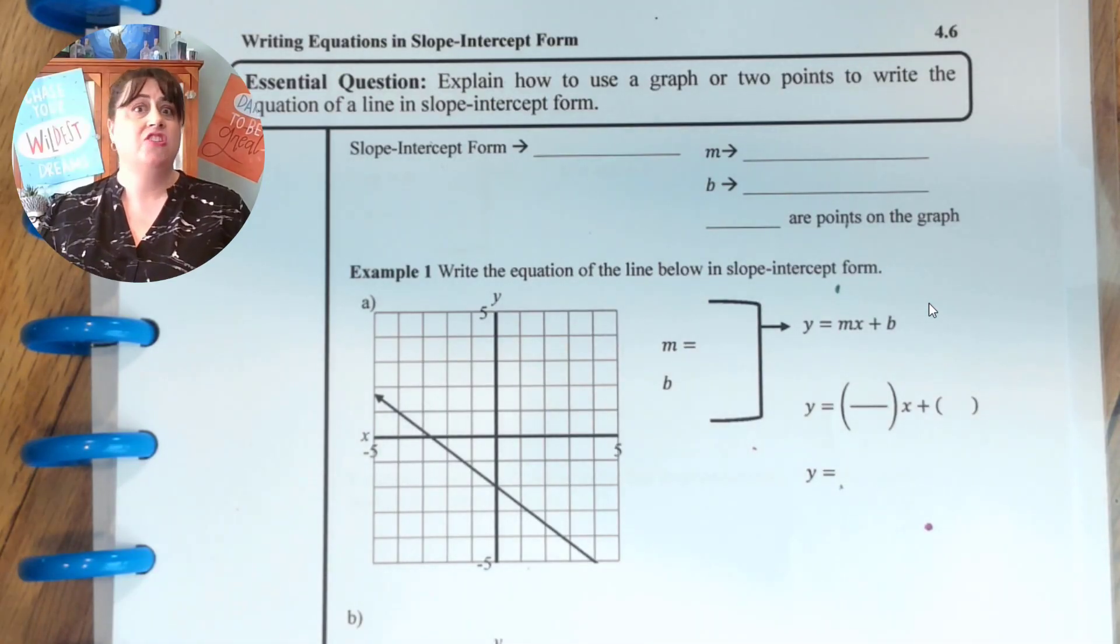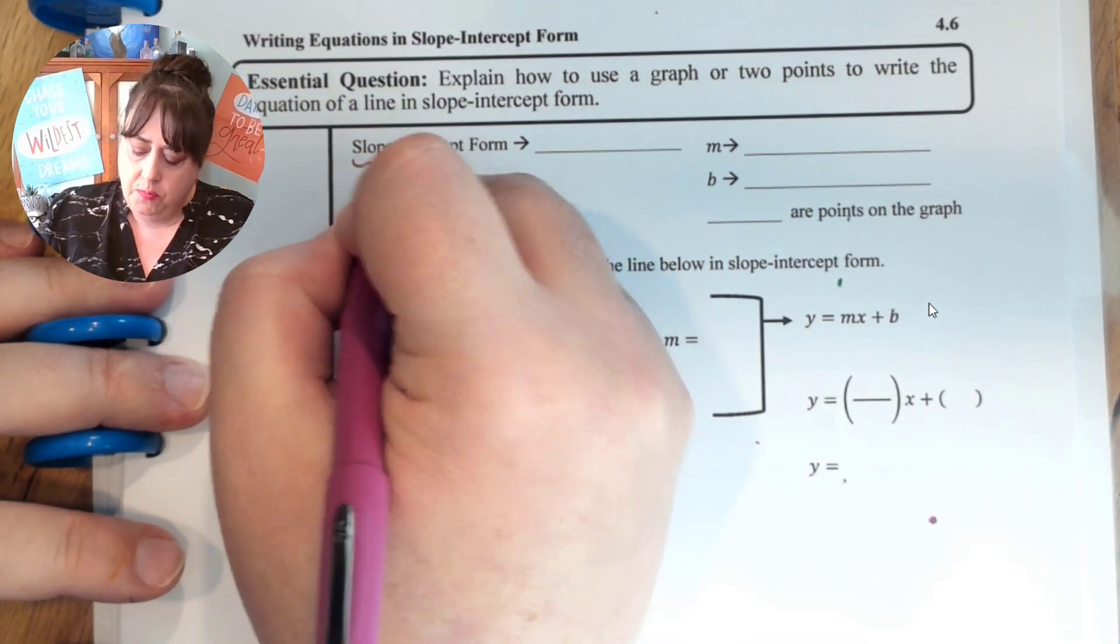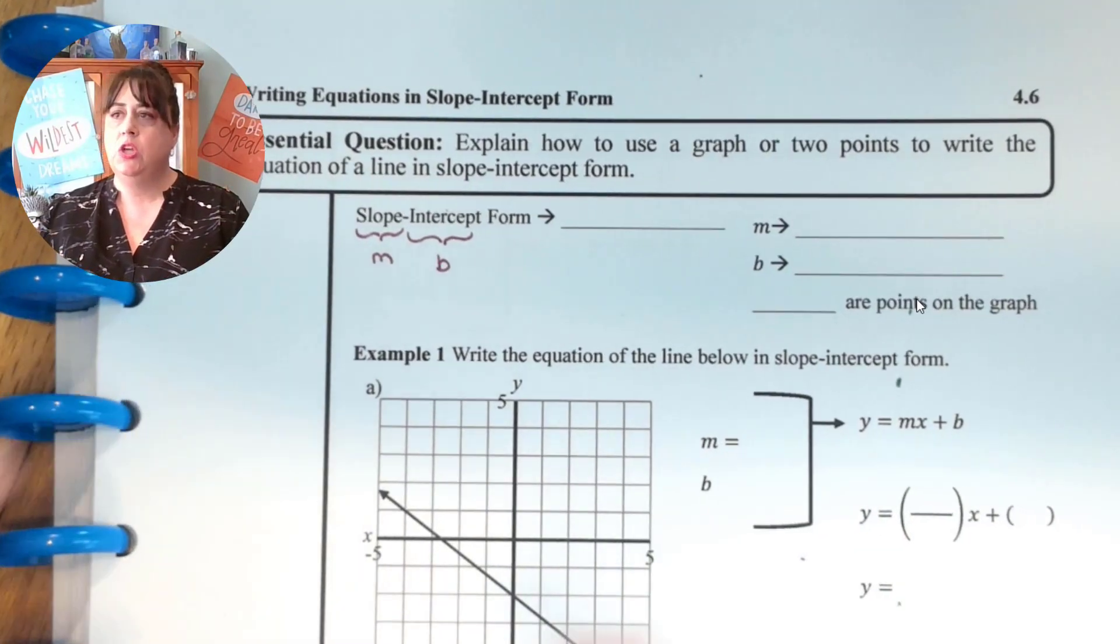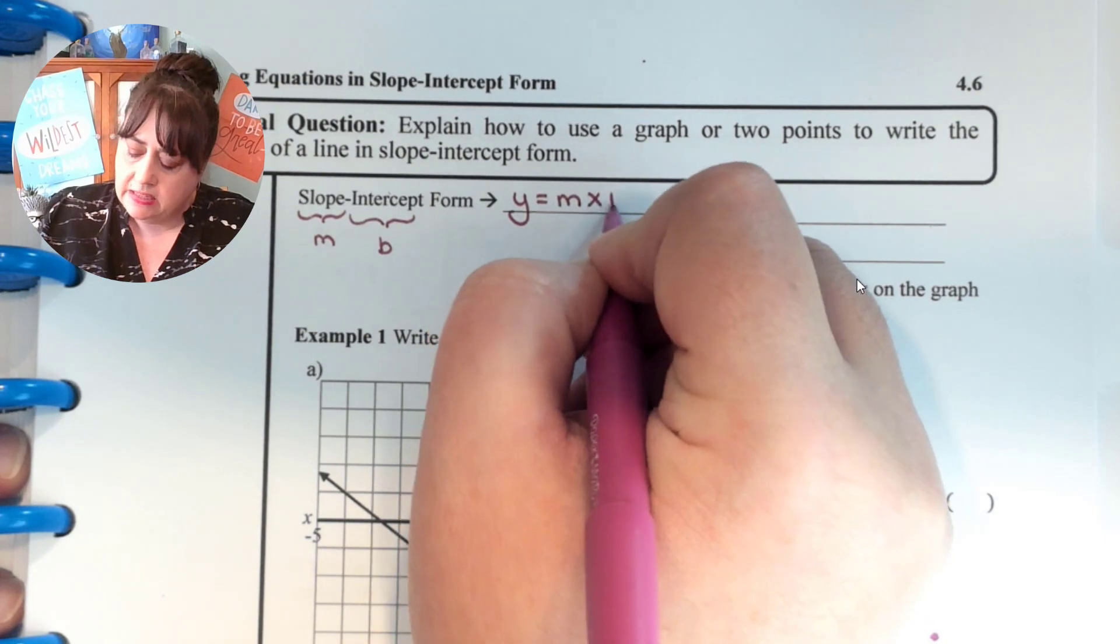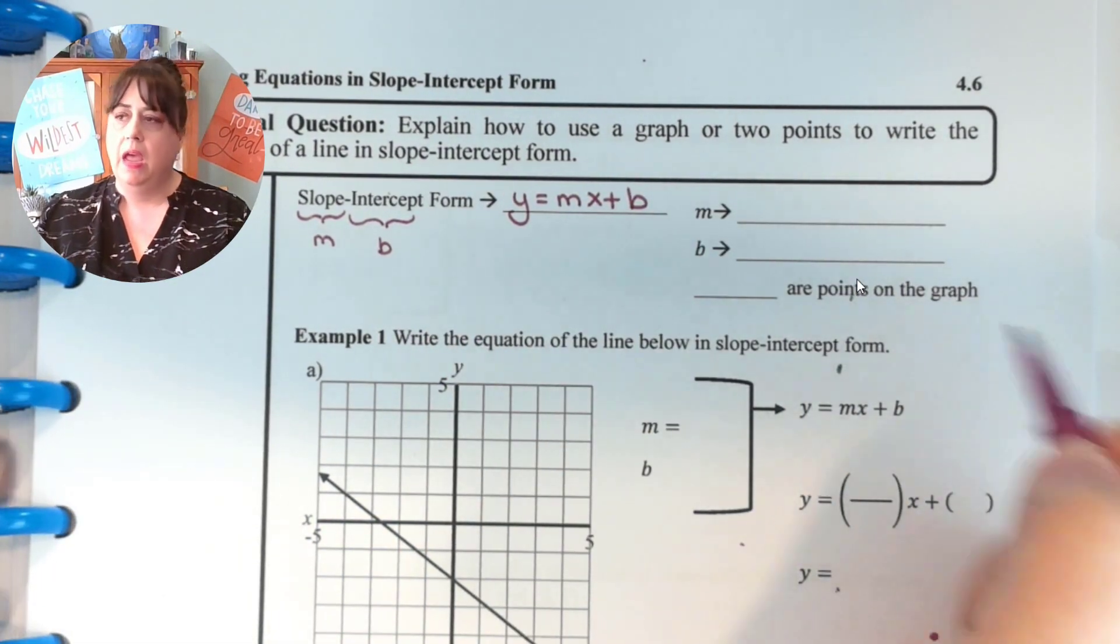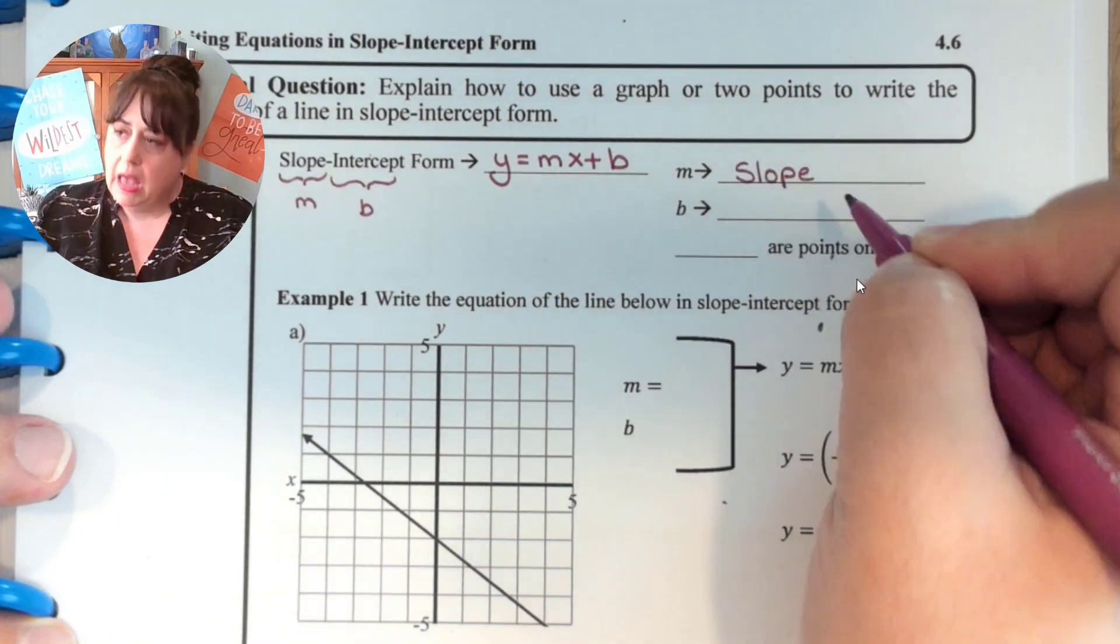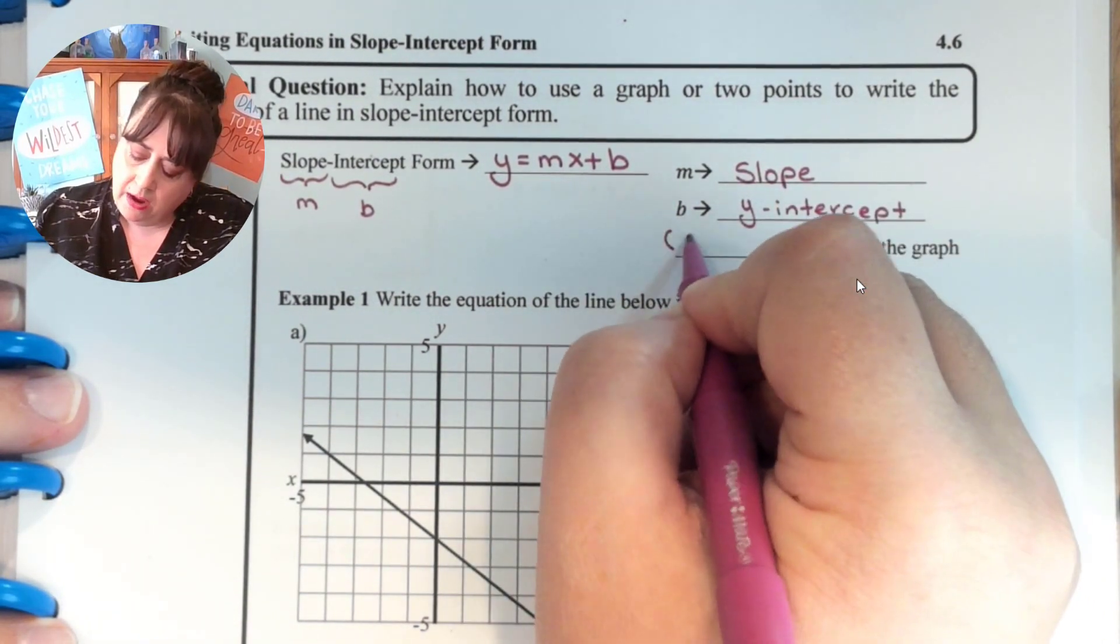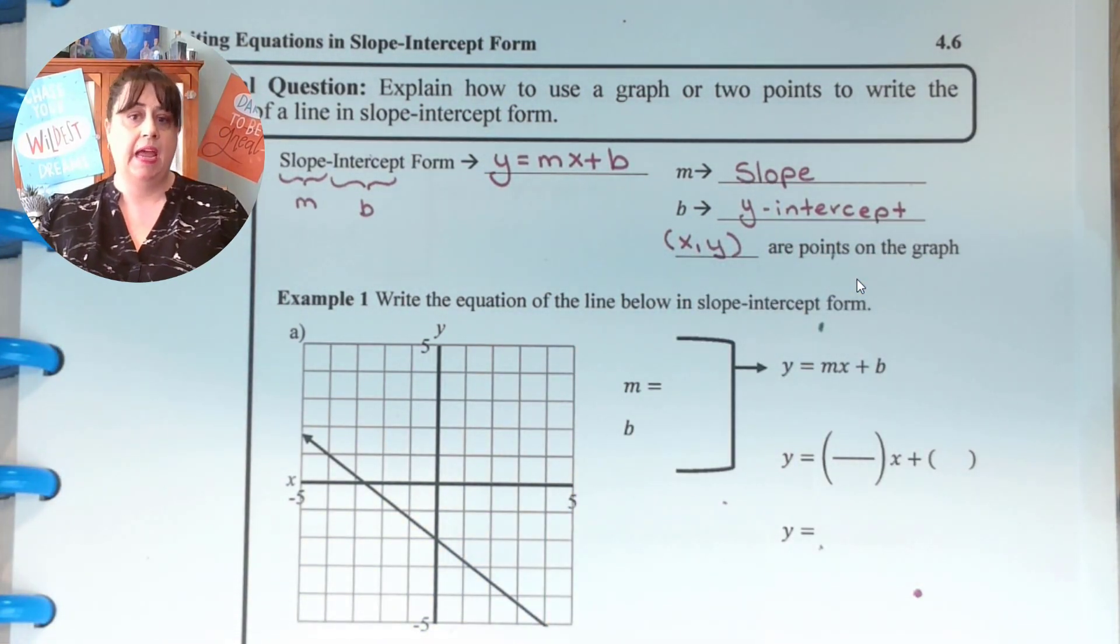Slope-intercept form actually tells you what it is that you are looking at. The slope, which is m, and the intercept, which is b. Slope-intercept form is in the form equation y equals mx plus b. If you recall from earlier lessons, m represents the slope and b represents the y-intercept. And the x and the y are just points on the graph, and so they always stay x and y.